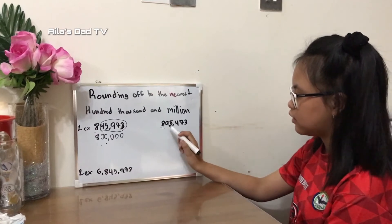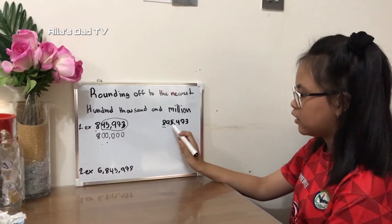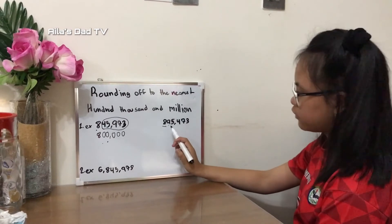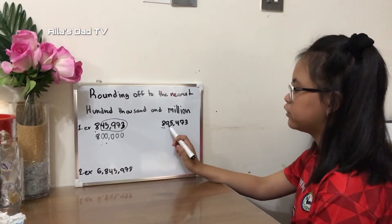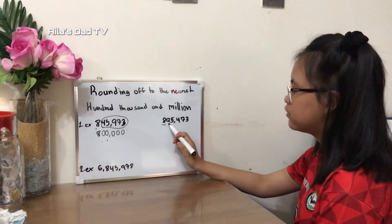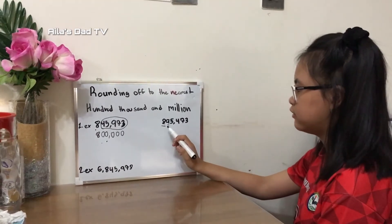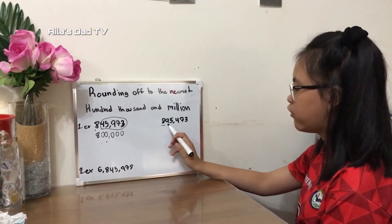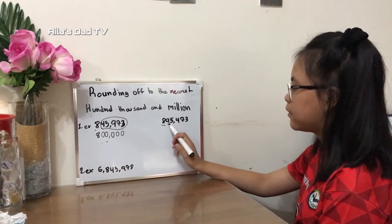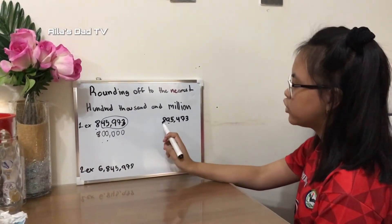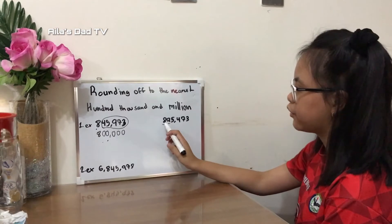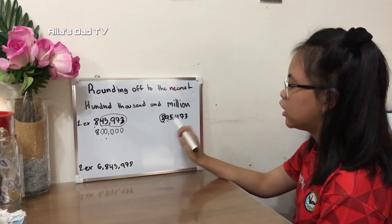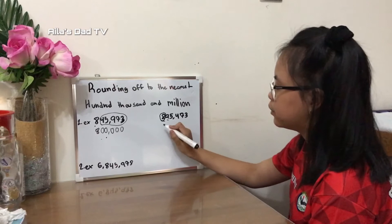The next step is to look at the digit to the right, and the right of eight is nine. We need to figure out if this number is greater than or less than five. Since nine is greater than five, what will happen next is that you add one to the number you're rounding off. The number we're rounding off is eight, so eight plus one becomes nine.